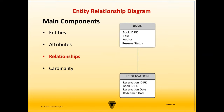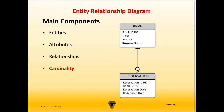Now let's discuss ERD relationships. Relationships are verbs that describe how entities interact with or are associated with other entities. Relationships are represented as lines that connect the various entities to one another. The relationship between two entities is bi-directional. For example, a book may require a reservation in order to borrow it from the library, and the reservation includes the borrowed book — with no book, there's nothing to reserve.